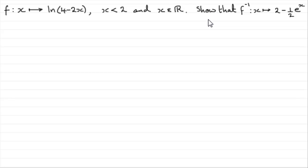And what we've got to do is show that the inverse function, that's f to the minus 1, is such that x maps onto 2 minus 1 half e to the power x. So, you might like to pause the video if you want to have a go at this, and come back, and I'll run through the solution.